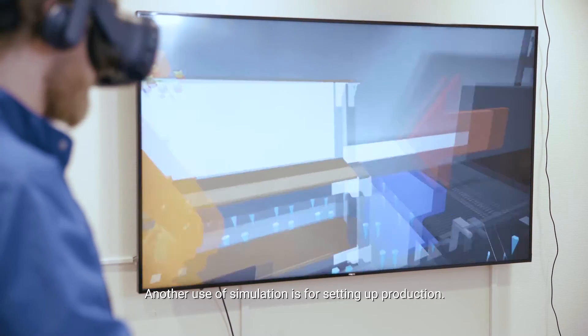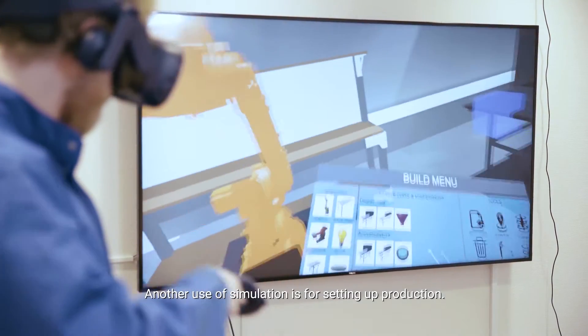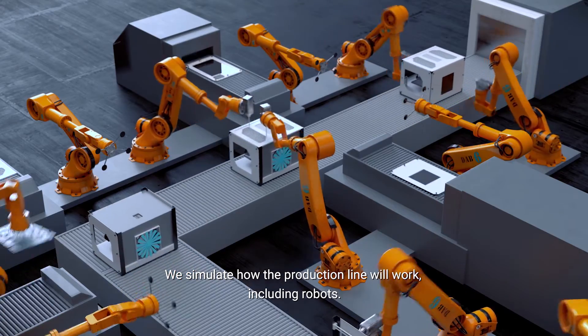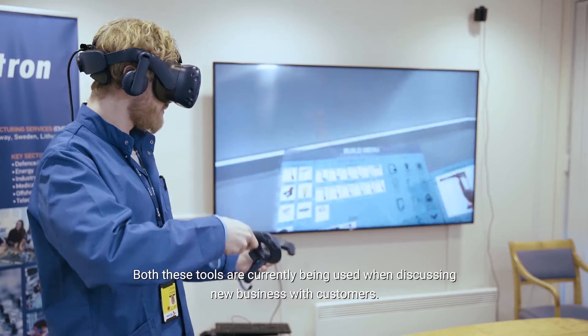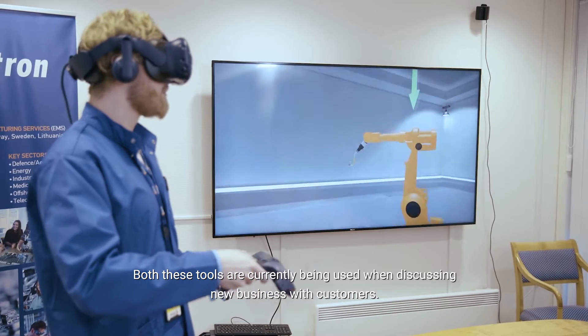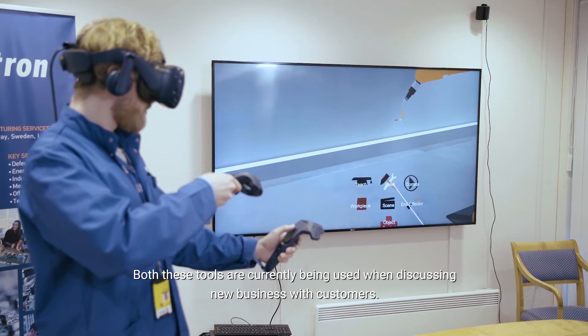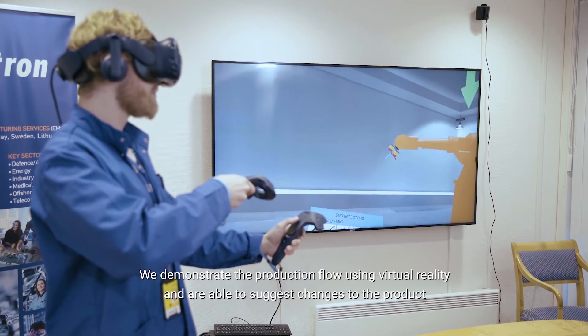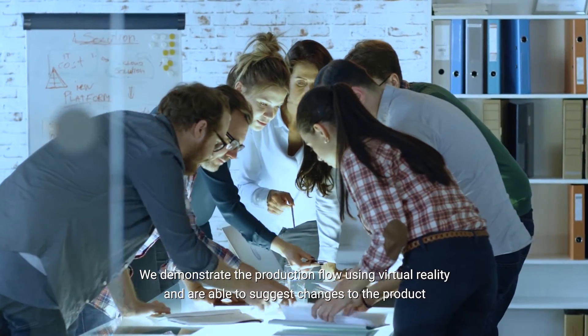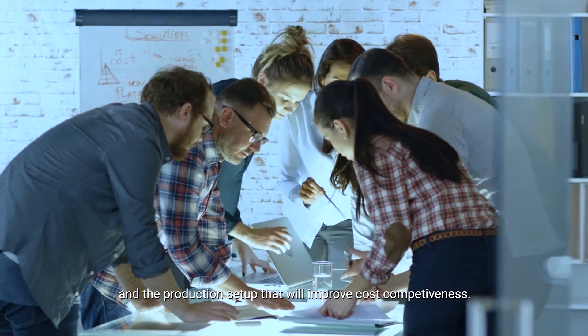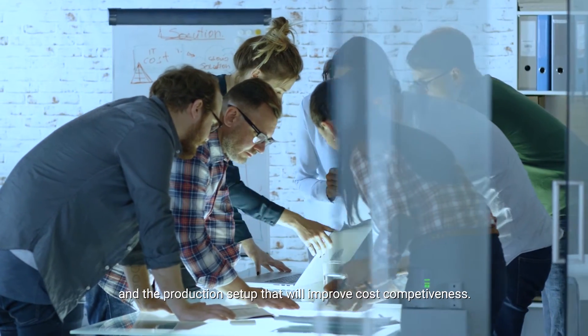Another use of simulation is for setting up production. We simulate how the production line will work, including robots. Both these tools are currently being used when discussing new business with customers. We demonstrate the production flow using virtual reality and are able to suggest changes to the product and production setup that will improve cost competitiveness.